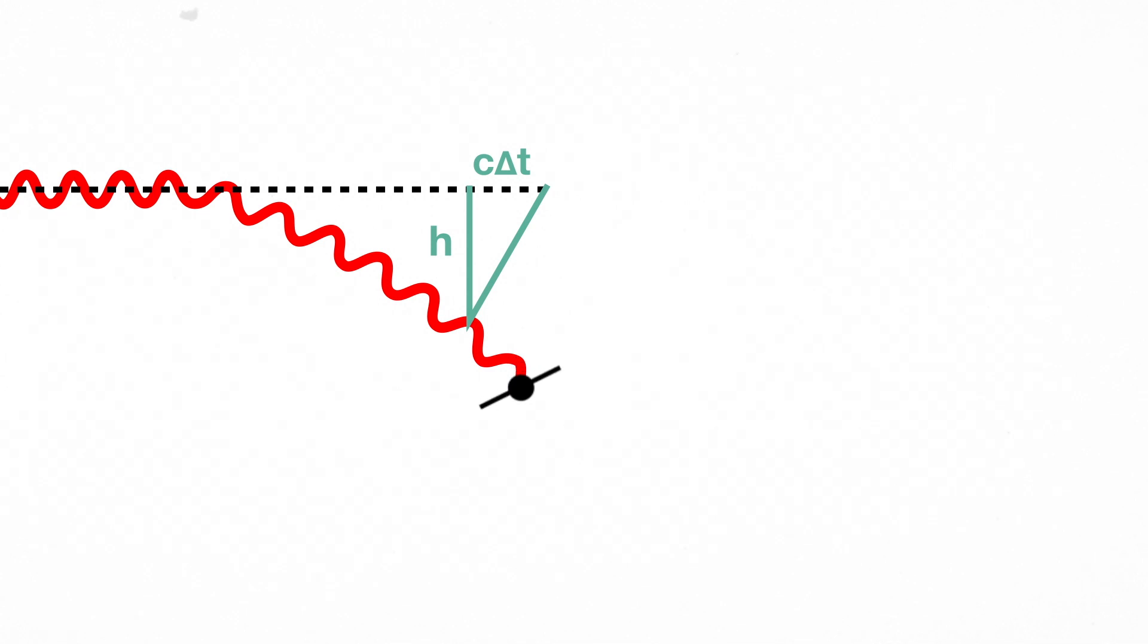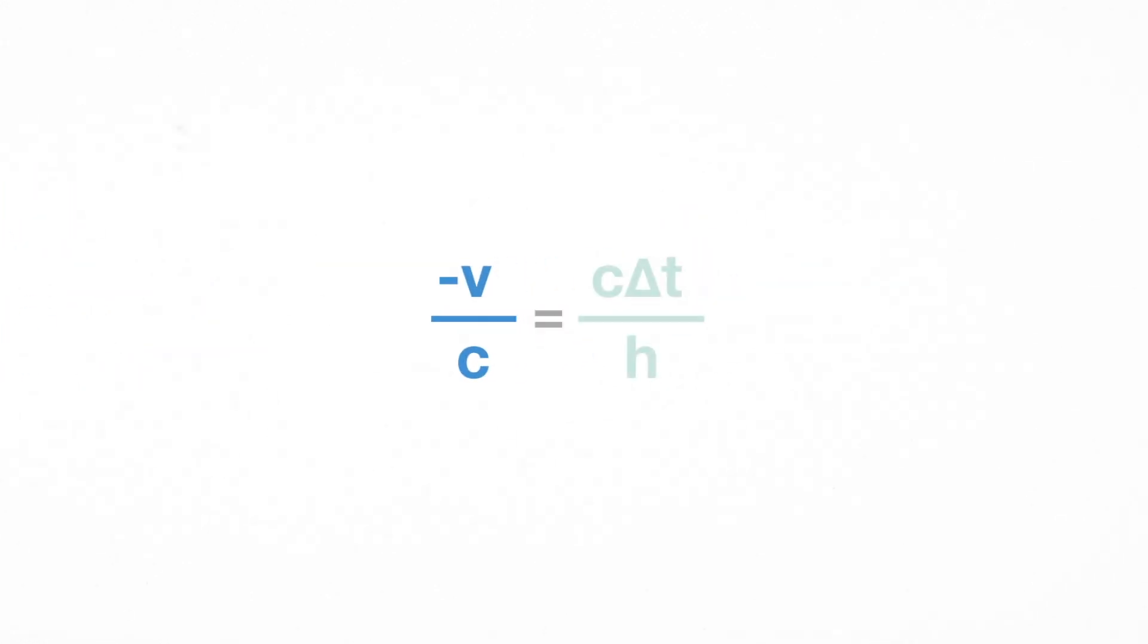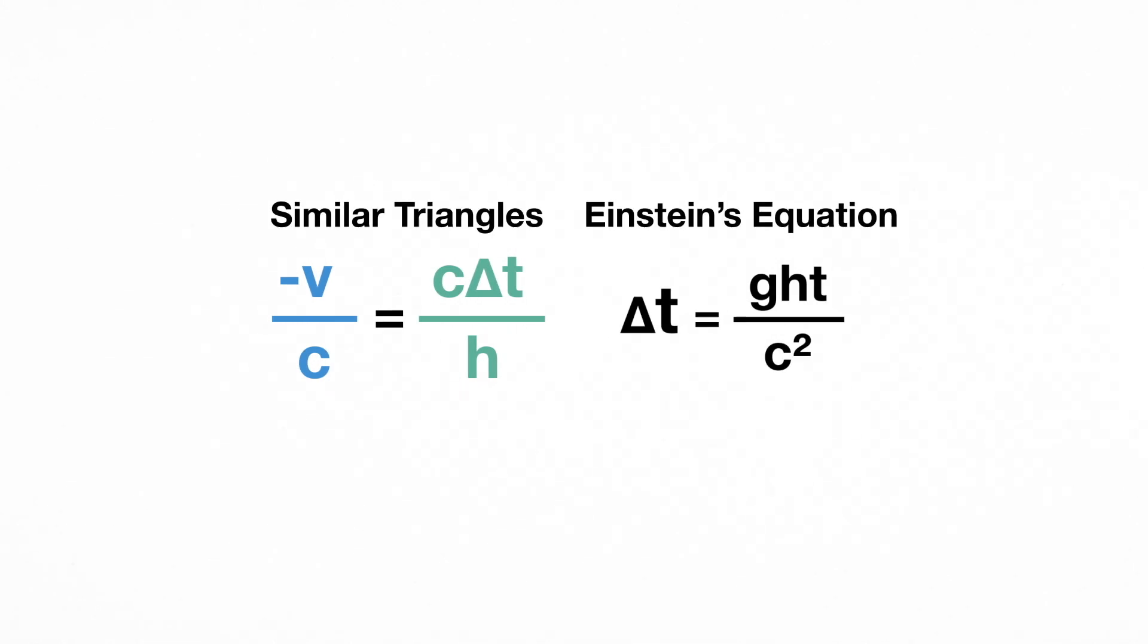Next, we see that the slope of the trajectory is velocity over the speed of light. Using these similar triangles, as well as Einstein's formula for gravitational time dilation, we can derive the formula for the velocity of the particle.